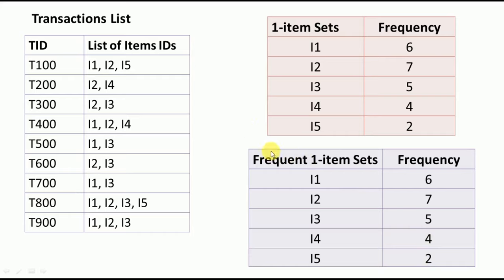From these frequent one-item sets, we need to generate two-item sets. The combinations are: I1-I2, I1-I3, I1-I4, I1-I5, then I2-I3, I2-I4, I2-I5, then I3-I4, I3-I5, and finally I4-I5. So totally 10 two-item sets are generated. I have listed all 10 possibilities and now we need to count how many times each pair was bought together.